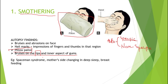In what cases is smothering seen? If a child wears a plastic bag to feel like a spaceman, the plastic bag can stick to their nose and mouth, ultimately leading to smothering and death. This is known as spaceman syndrome.